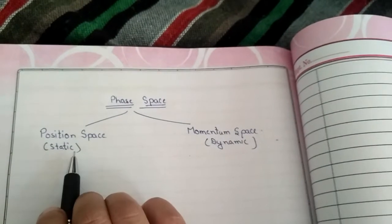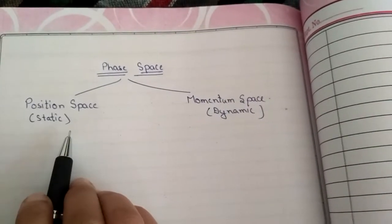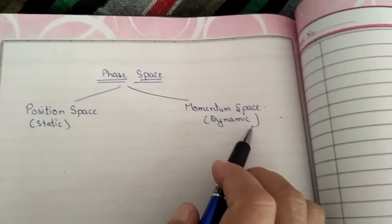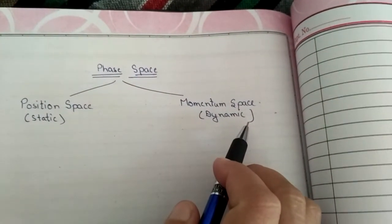Position space is a static space and momentum space is a dynamic space. Static space means in which there is no changes occur at a time, dynamic in which there is some changes occur at time according to their velocity.